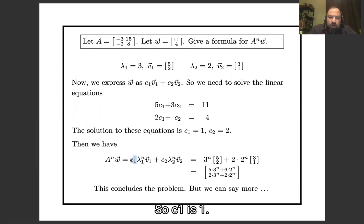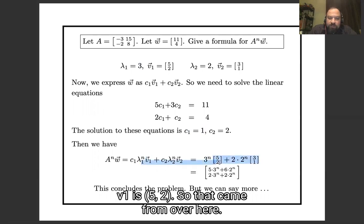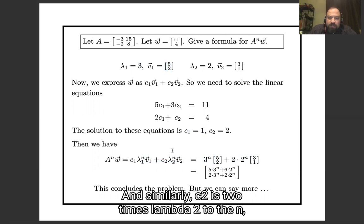So c₁ is 1, so there's an invisible 1 over here. λ₁ is 3, so this 3 went over here. v₁ is [5, 2], so that came from over here.